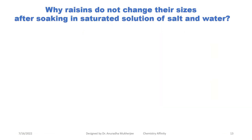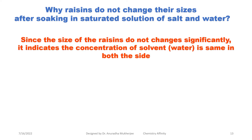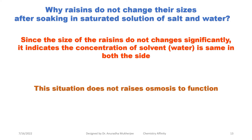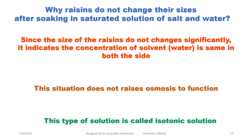Now from this situation, what can we conclude about why this is happening? Since the size of the resins does not change significantly, it indicates that the concentration of the solvent is the same on both sides. Since the concentration of solvent is the same on both sides, that means osmosis is not taking place. This type of solution is called an isotonic solution — that means if inside the cell the concentration of solute is equal to the concentration of solute outside, then osmosis doesn't take place, and this kind of solution is called the isotonic solution.